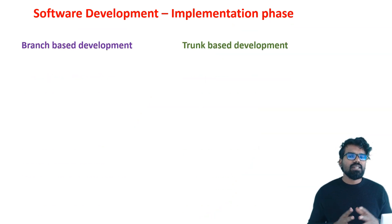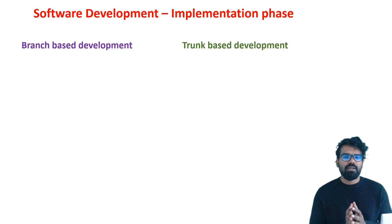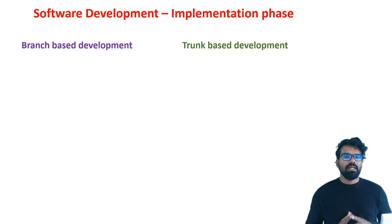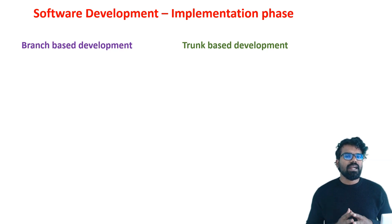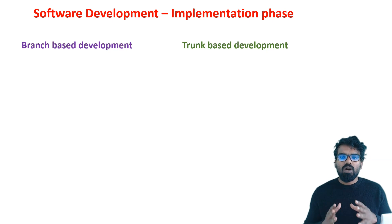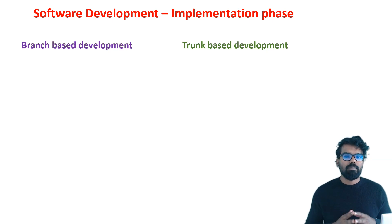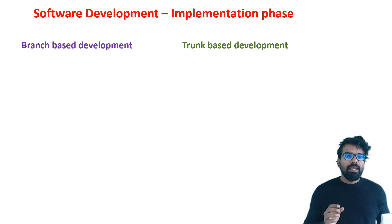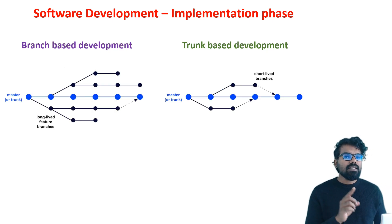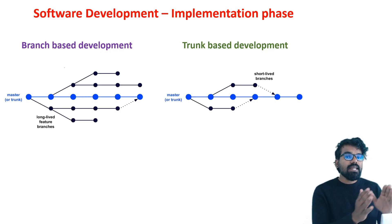Ideally in any Java project, you will be using some kind of version controlling. Let's say we are using Git version controlling. There you can use two types of development strategy — branch based development or trunk based development. Here you can see a picture about the branch based and trunk based development.